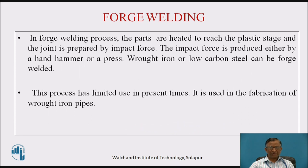The other process of welding is forge welding, in which the parts are heated to reach the plastic stage and the joint is produced by impact force. The impact force is produced either by a hand hammer or a press. Wrought iron or low carbon steel can be forge welded. However, this process has very limited use in present times and is used in the fabrication of wrought iron pipes.